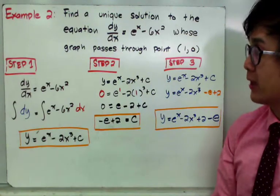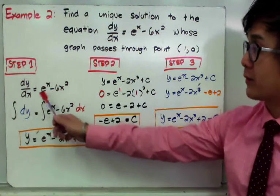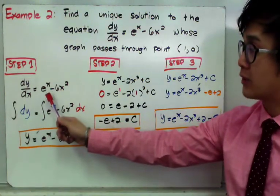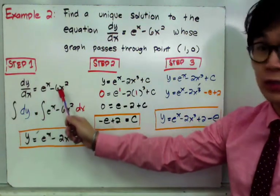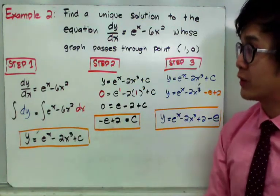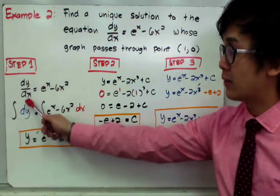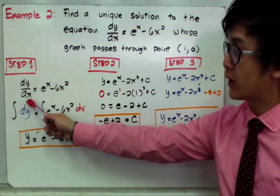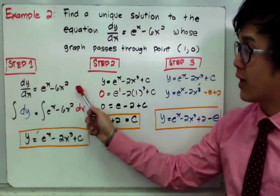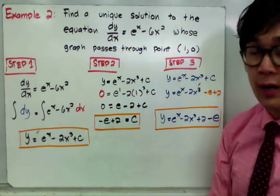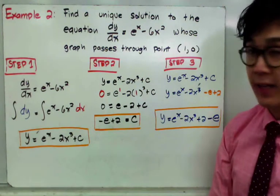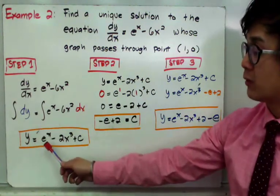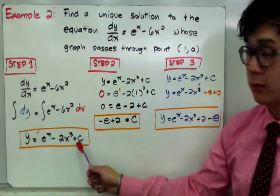The first step is to integrate both sides of the equation, just as we did in example 1 — cross-multiplying dx to the other side. This gives us the integral of dy and the integral of the function dx, which yields y = e^x minus 2x cubed plus C.